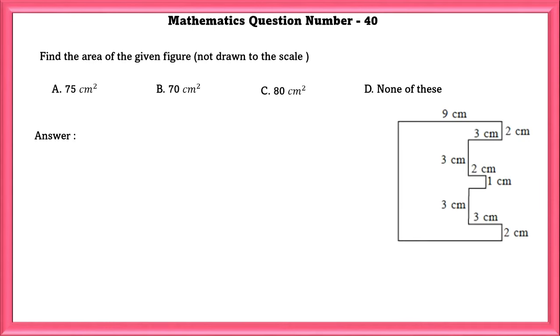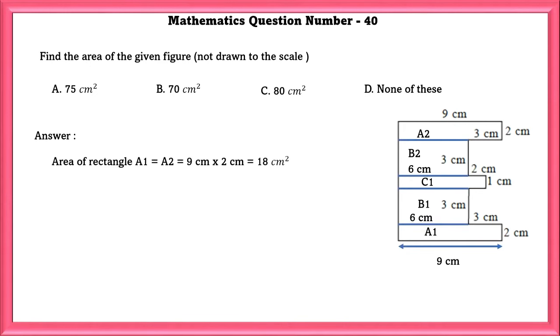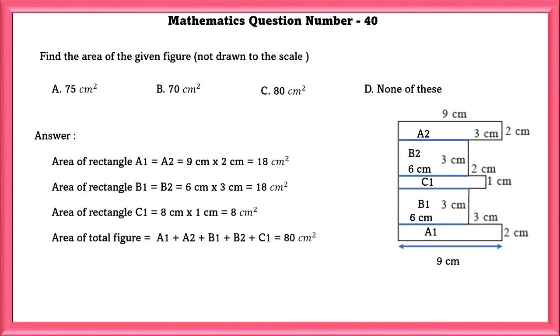Mathematics question number 40. Find the area of the given figure not drawn to scale. We can divide the figure into 5 rectangles. Here area of A1 and A2 are similar and their area is equal to 18 square centimeter. Similarly B1 and B2 are having the same area which is also equal to 18 square centimeter. C1 is having an area of 8 centimeter square. Total area of the figure is equal to A1 plus A2 plus B1 plus B2 and C1 which is equal to 80 square centimeter.